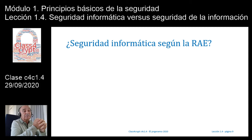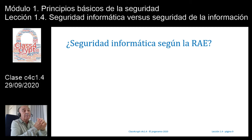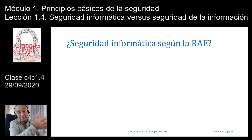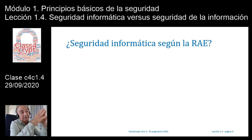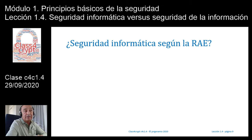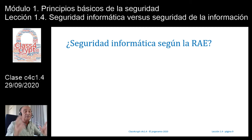Cuando queremos buscar una definición, una primera posibilidad es acercarnos a la Real Academia de la Lengua Española, la RAE. Sin embargo, la RAE solamente da definiciones de palabras, no de conjunto de palabras, como sería seguridad informática o seguridad de la información. Podemos buscar qué entiende la RAE por seguridad y qué entiende por informática, aunque en el fondo nos interesan más los sistemas de información.